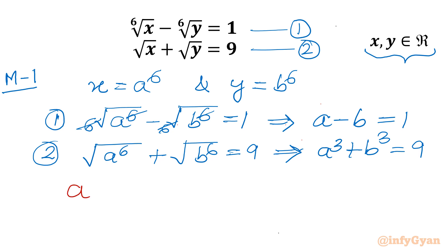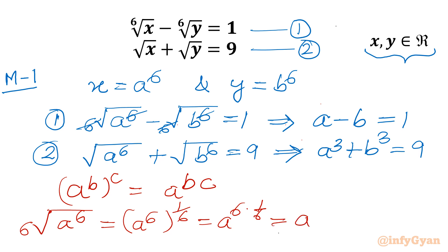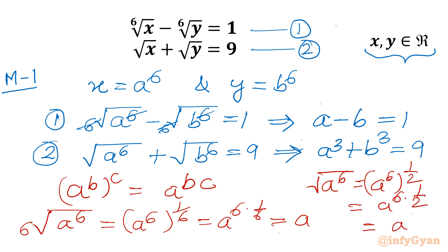By using the exponent law, which states that (a^b)^c equals a^(b×c): the 6th root of a⁶ is a⁶ whole to the power 1/6, which becomes a^(6×1/6), so just a. Similarly, the square root of a⁶ is a⁶ to the power 1/2, and once we take the product of exponents it becomes a³.